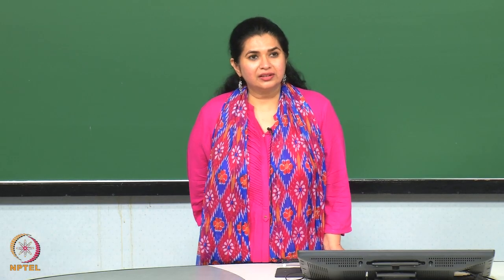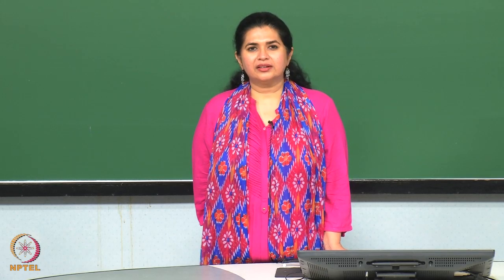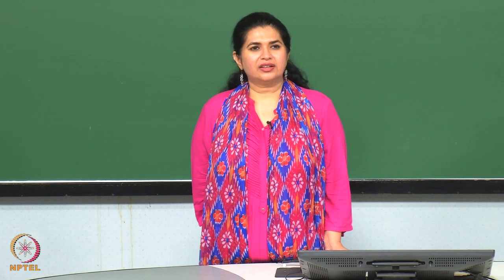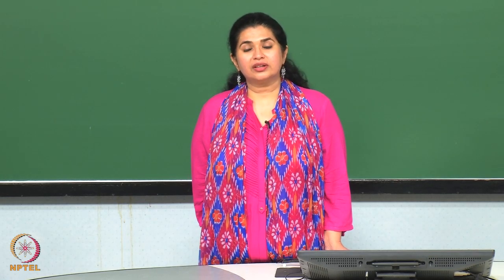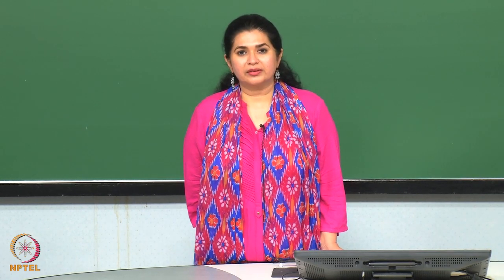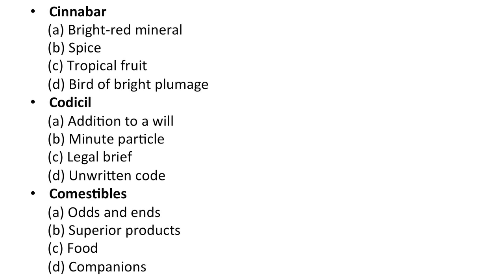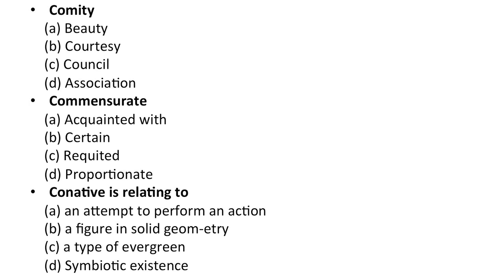Look at the variety that test takers may come up with — the wide range of domains. Next is comestibles — A — odds and ends, B — superior products, C — food, D — companions. Next is comity — A — beauty, B — courtesy, C — council, D — association. Commensurate — A — acquainted with, B — certain, C — recruited, D — proportionate. Connative — relating to an attempt to perform an action, figure in solid geometry, a type of evergreen forest, or symbiotic existence.